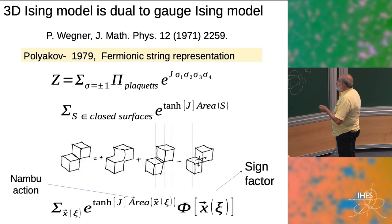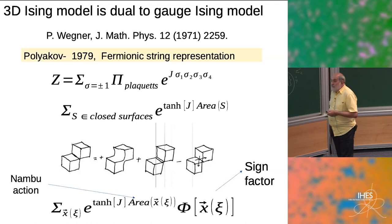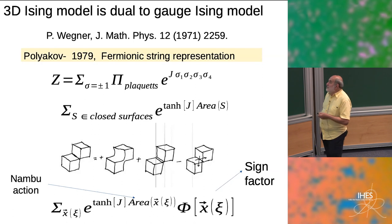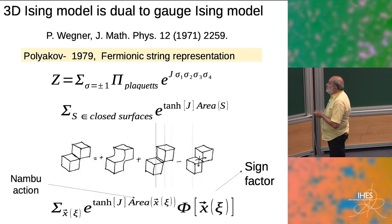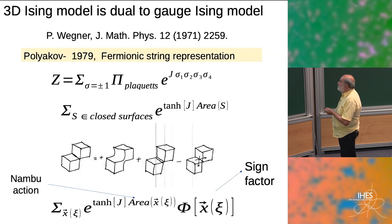If you artificially write a sum over parameterized surfaces, you will have overcounting. To avoid this overcounting, you assign a sign — plus, plus, and minus — for self-intersections.